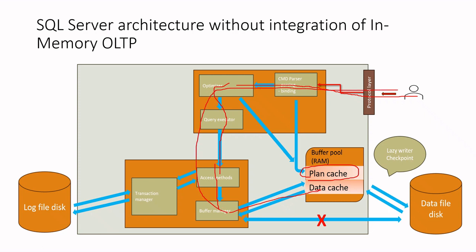Pretty much straightforward. In the case of data change queries — for example, insert or delete — the process is a little bit different. When the query reaches access methods, the transaction is first logged in the transaction log file by the transaction manager. Then data is changed in the buffer pool and an acknowledgement is sent back to the client.